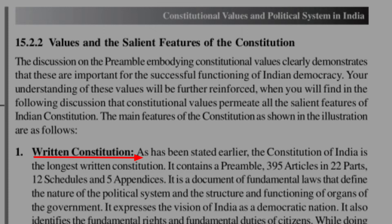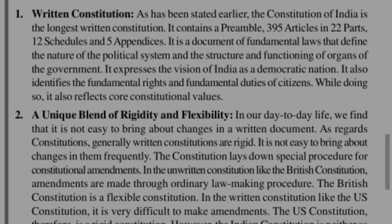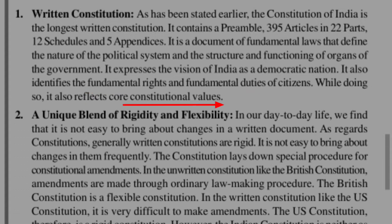It contains 395 articles, 22 parts, and 12 schedules, along with more than 110 amendments. In the written constitution, we focus on the nature of the political system and the structure and functioning of the three organs of government — legislature, executive, and judiciary. It expresses India as a democratic nation, identifies the fundamental rights and fundamental duties of citizens, and thereby reflects the core constitutional value.